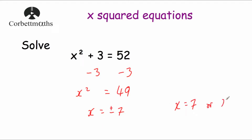So x equals 7 or x equals negative 7. Let's check: 7 squared is 49, plus 3 is 52 ✓. And negative 7 squared — a negative times a negative is positive — so negative 7 times negative 7 is 49, plus 3 is also equal to 52 ✓. There are two solutions.